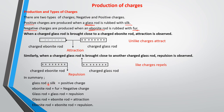In summary: a glass rod rubbed with silk produces positive charge, and an ebonite rod rubbed with fur produces negative charge. A glass rod and a glass rod give repulsion; a glass rod and an ebonite rod give attraction because these are unlike charges; an ebonite rod and an ebonite rod give repulsion because these are like charges. So like charges repel, unlike charges attract.